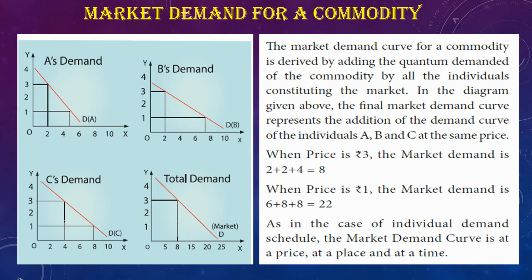Market demand for a commodity: the market demand for a commodity is derived by adding the quantity of demand for a commodity by all the individuals constituting the market. In the diagram given below, the final market demand curve represents the addition of the demand curves of individuals A, B, and C at the same price.